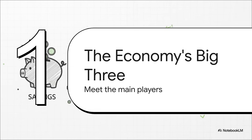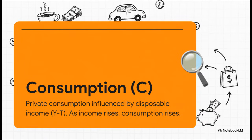Let's dive in. To do that, we first have to meet the three main players on our economic stage. Once you understand these, you're on your way to seeing the bigger picture. First up, we've got consumption, which we'll just call C. This is pretty simple — it's everything we as individuals and households buy: your groceries, a new phone, that morning coffee. The key thing here is that what we spend is tied directly to our disposable income.